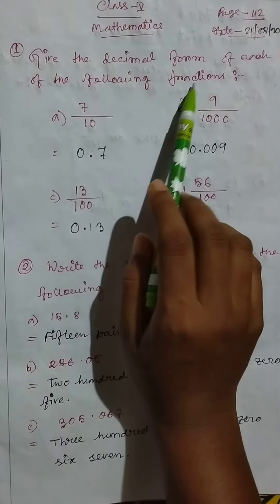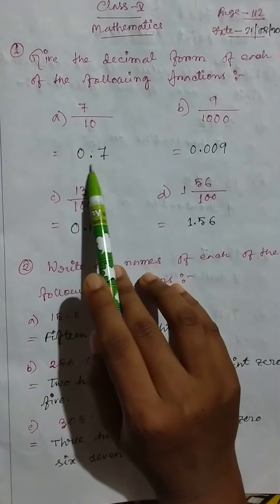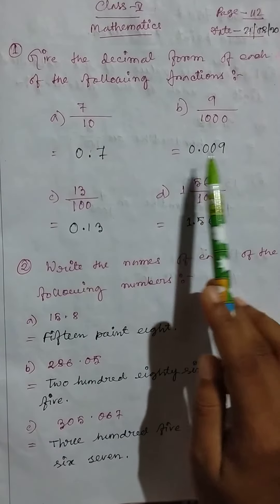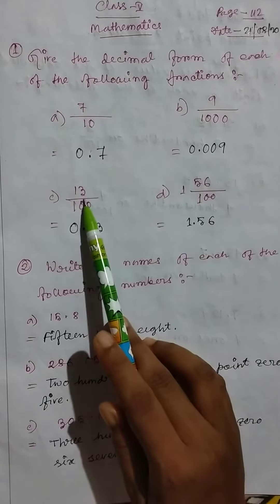7 by 10 equals 0.7, and 9 by 1000 equals 0.009.